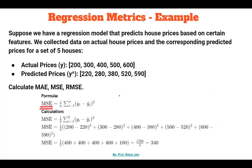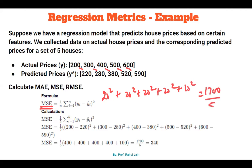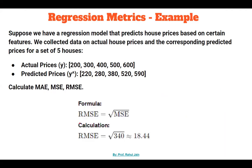Now let's calculate Mean Squared Error. We take the square of each difference: 20² + 20² + 20² + 20² + 10² = 400 + 400 + 400 + 400 + 100 = 1700. Dividing by n=5, MSE = 340. We square the difference between actual and predicted price, then divide by the total number of values in the dataset.